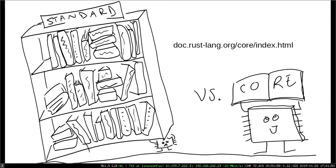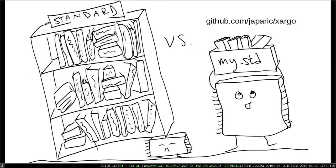If you're working without the standard library, where do the primitive types and methods come from? Even when you opt out of the standard library, most Rust programs will have the core crate available. It doesn't help you with I/O and multithreading the same way the standard library does, but it still exposes a bunch of the primitives and macros you're used to having. You can find all of the core crate docs and compare them to the standard library docs on the Rust site.